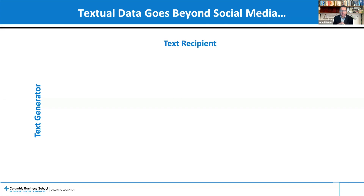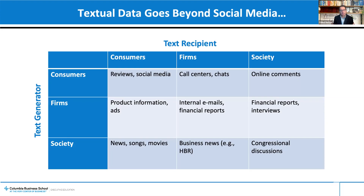One interesting thing about text is that unlike numbers, which are often just created as a figure, with text there is almost always a generator — a person who writes the text — and a recipient, a person who's supposed to read it. You can categorize sources of textual data along these two dimensions. I created a three-by-three grid, where under society I put both government as well as culture-type data like songs and movies. A lot of the work we see both in academic research and by companies is in the consumer-to-consumer cell, what we call UGC — user-generated content — where consumers generate content for other consumers to read.